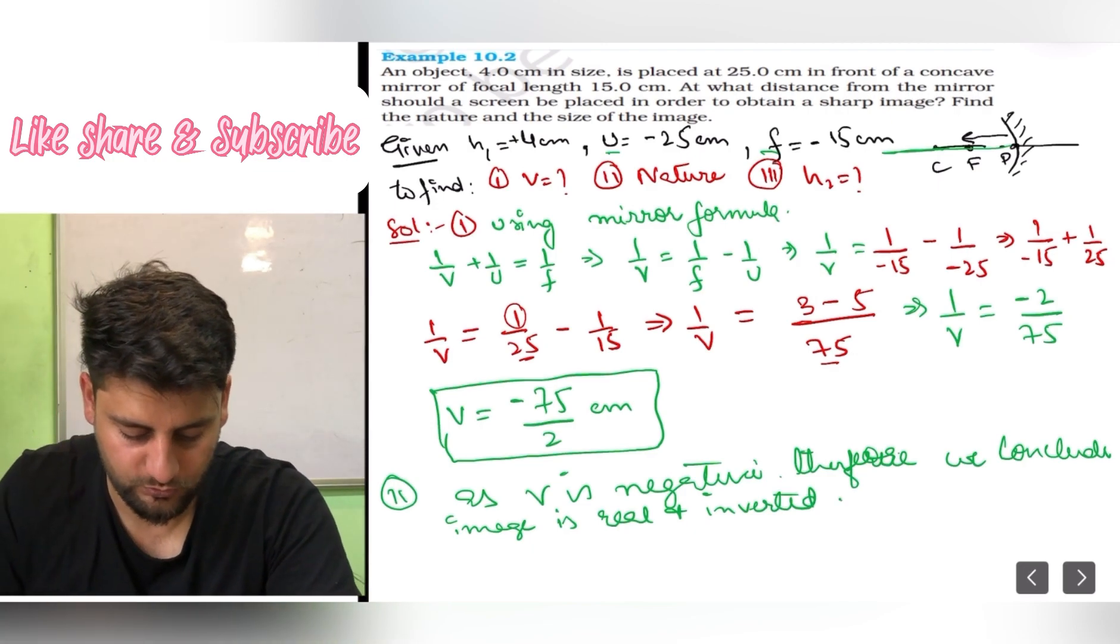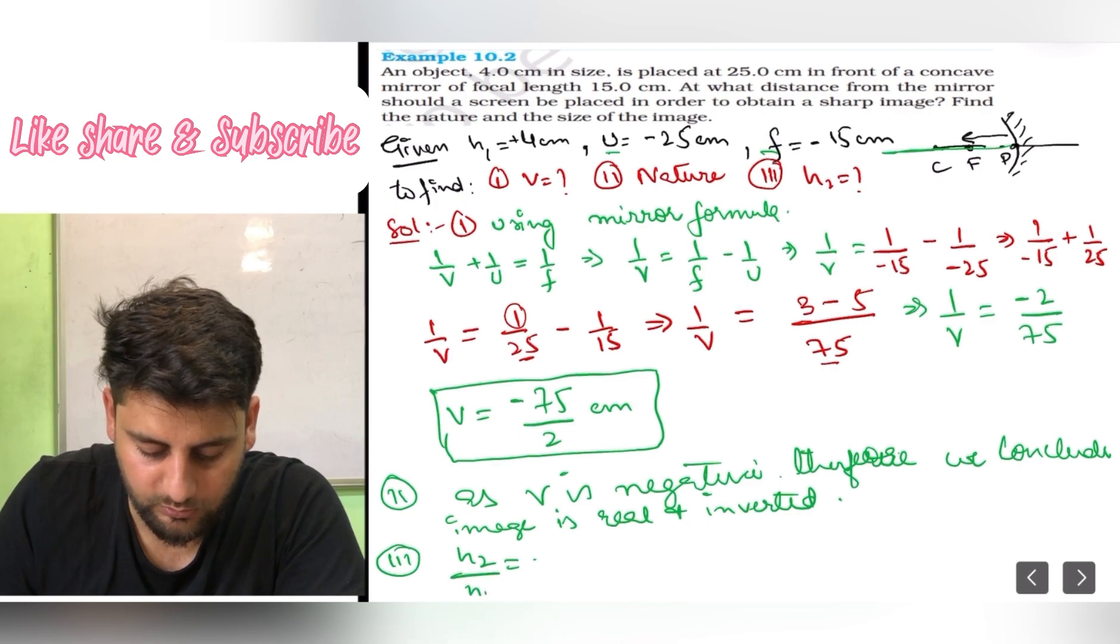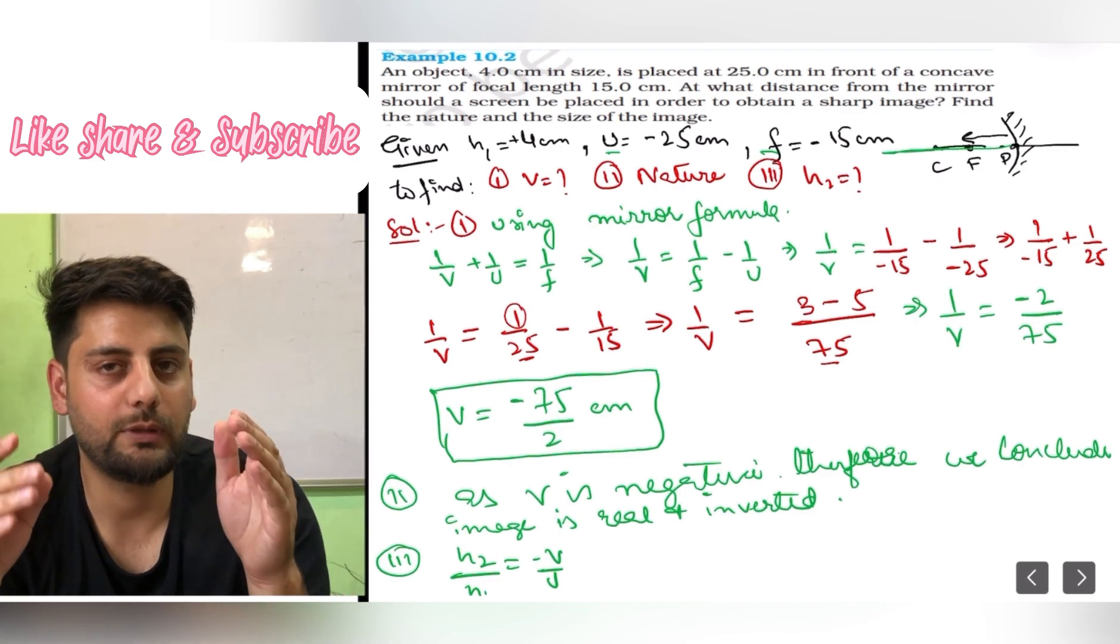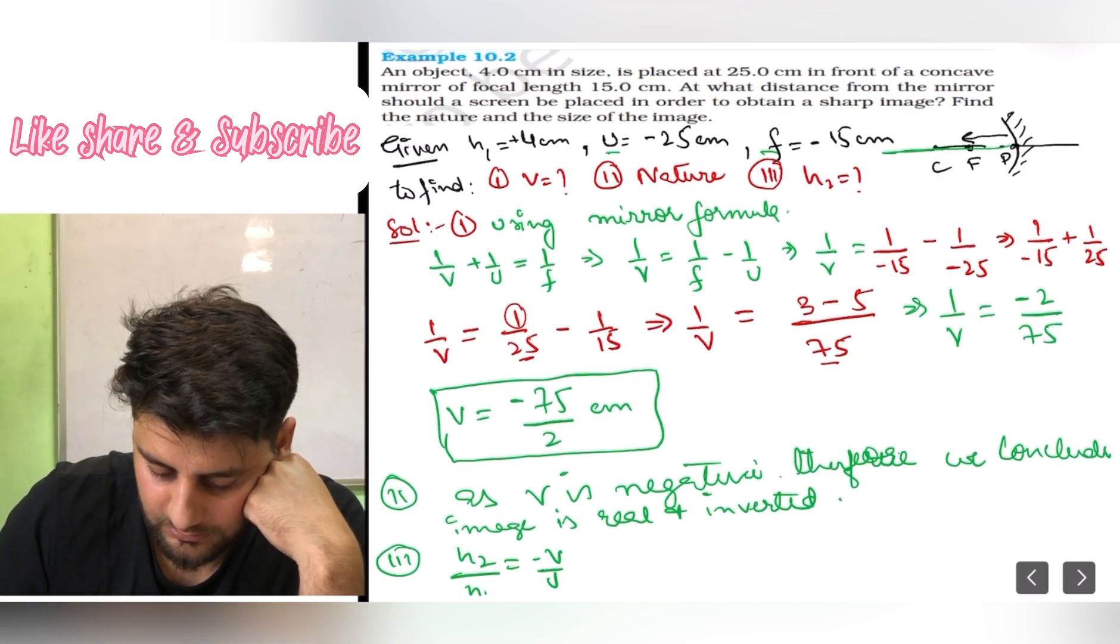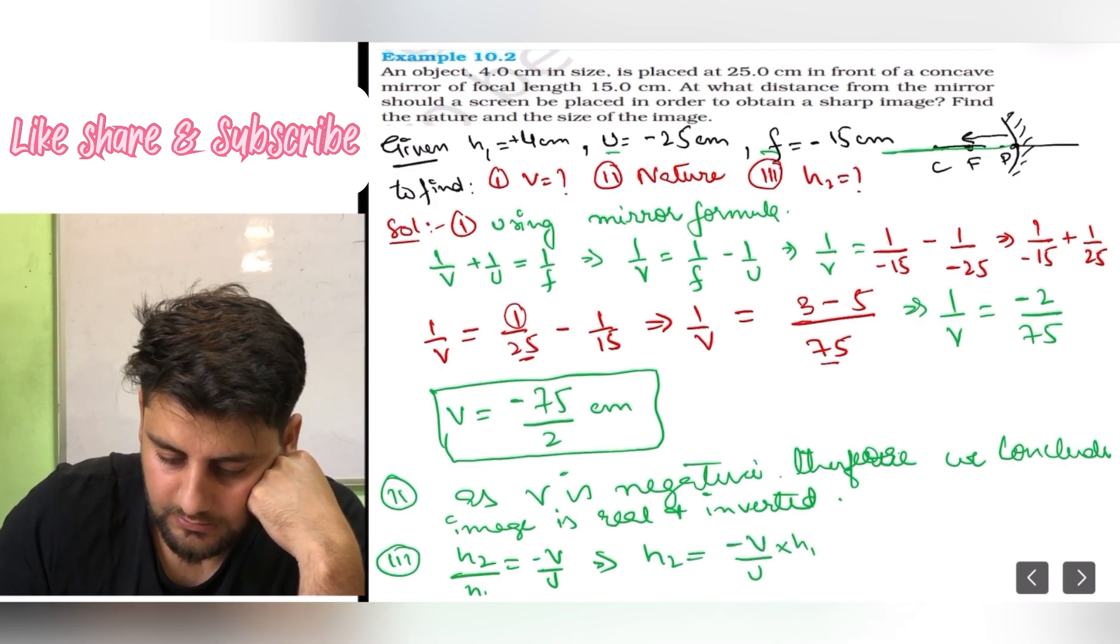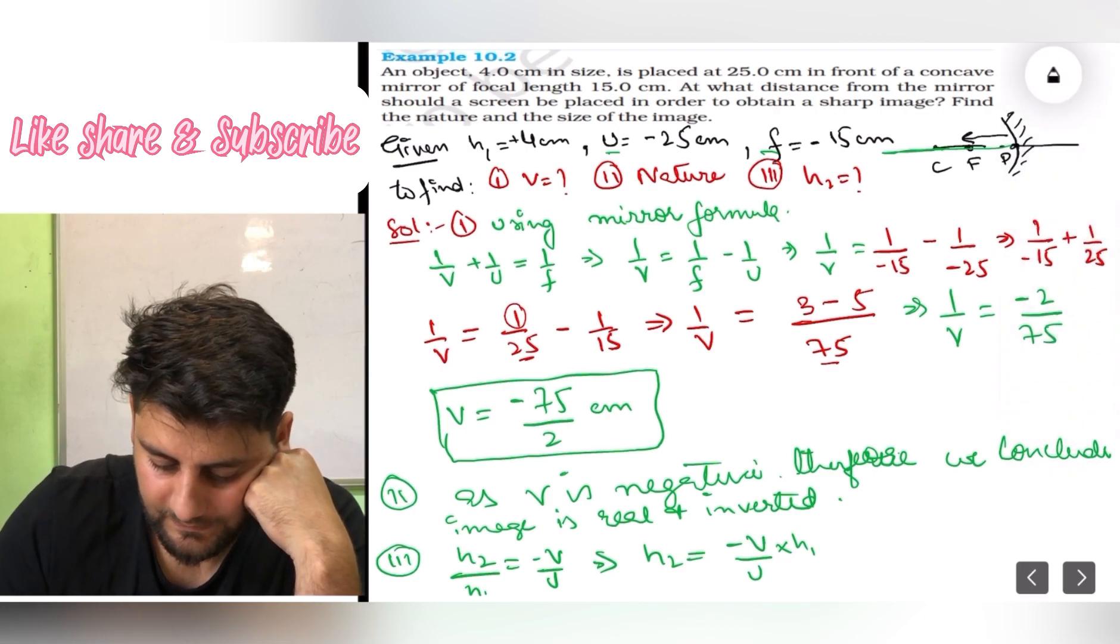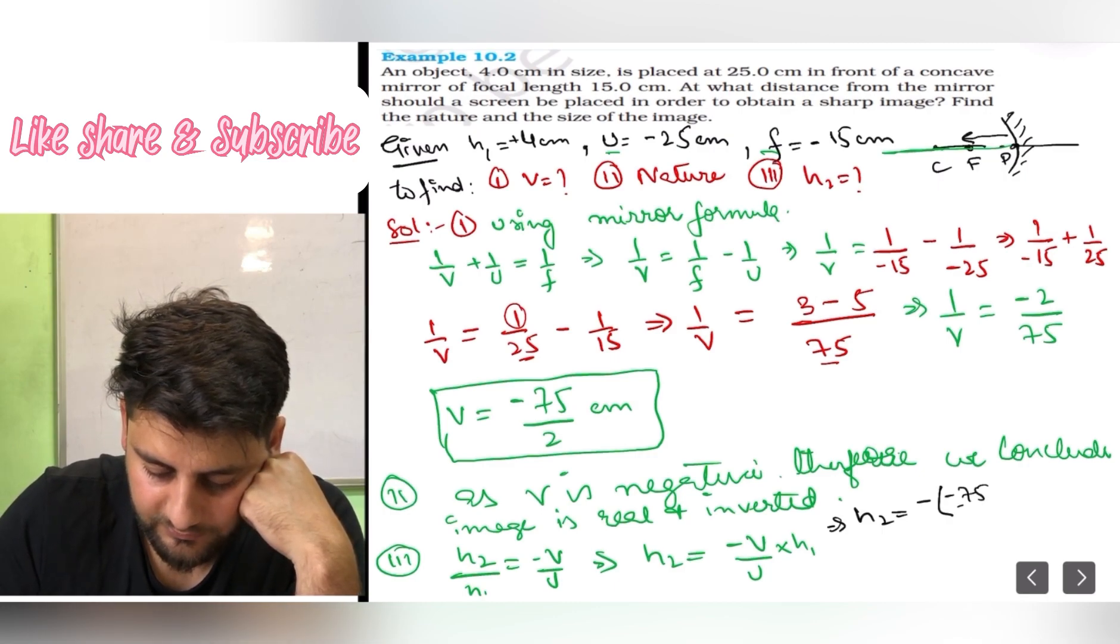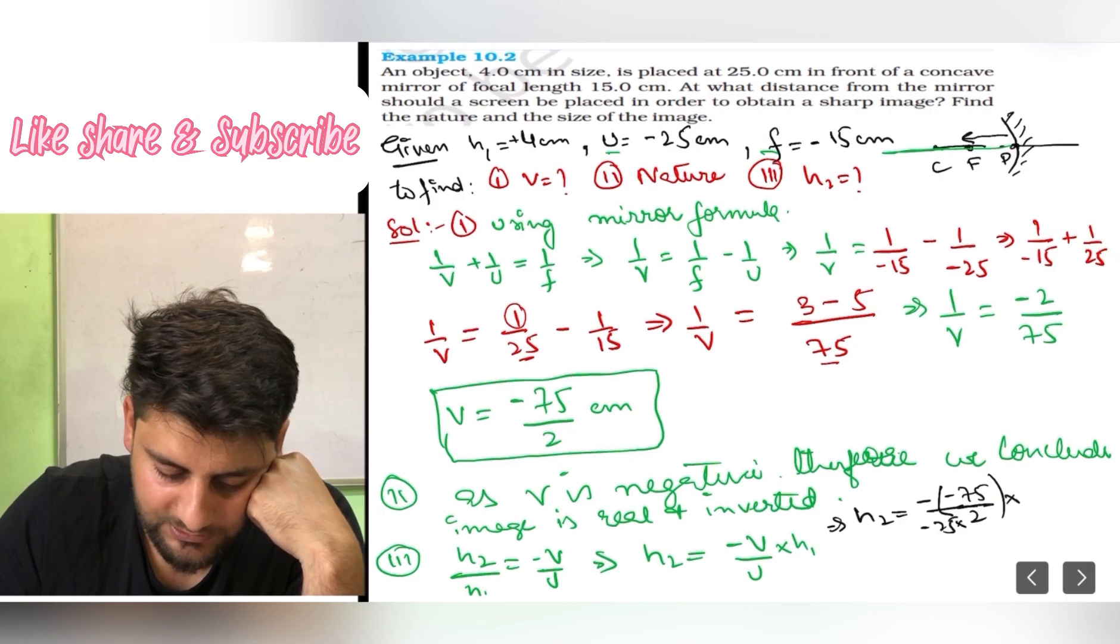Now the third thing he is asking us to find is h2. Since we know h2 upon h1 equals minus v upon u. This is the m equation. m equals h2 upon h1, also equals minus v upon u. So h2 equals minus v upon u into h1. So put the things in it and get the value. We will write h2 equals minus v, v is minus 75 upon 2 divided by u, u is minus 25, into h1. h1 is 4.